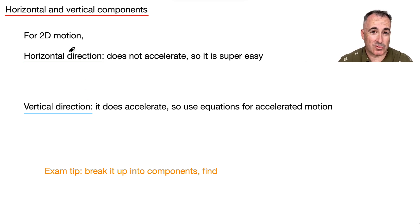So in the horizontal direction, we consider what's going on in acceleration. If there's no air resistance, it's not accelerating. This is the key piece. In the horizontal direction it does not accelerate, so it's super easy then. If the acceleration is zero, we can just use velocity equals distance over time. But in the vertical direction it does accelerate.